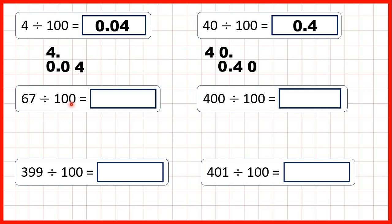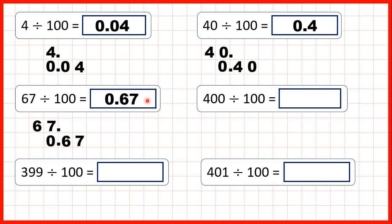Now we have 67 divided by 100. We write out the number with the decimal point on the end, copy down the decimal point, and move each digit one, two squares across. We need a zero in our empty ones column, and that gives us our answer 0.67.